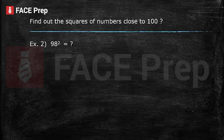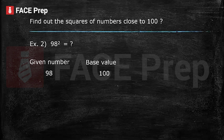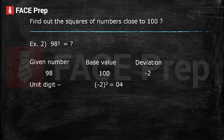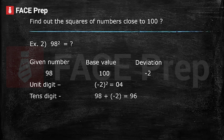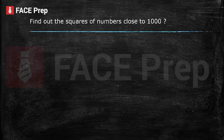Let's solve one more question: find the square of 98. The base value is 100. The deviation is minus 2, because 98 minus 100 gives us minus 2. The unit digit is the square of the deviation: that is 04. We write 04 because the square of any number greater than 31 always has 4 digits. The tens digit is 98 plus minus 2, which gives us 96. The final answer is 9604.